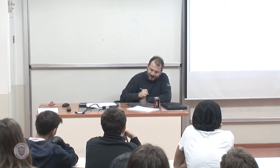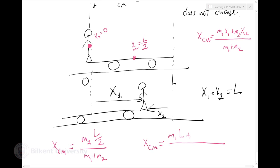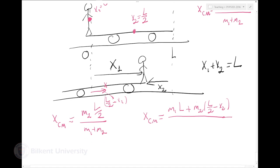So the initial x center of mass is M2 times L over 2, divided by M1 plus M2. In the final situation, I am at x1, and the center of mass of the car has moved to L over 2 minus x2. So the final center of mass is M1 times x1 plus M2 times (L over 2 minus x2), divided by M1 plus M2.